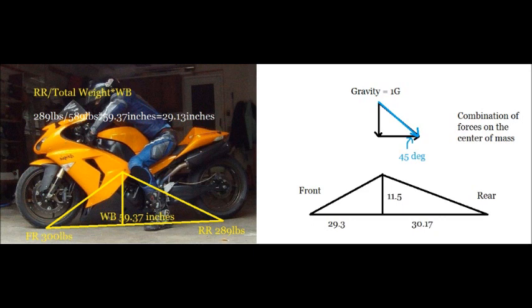So since both forces are the same, we can see on the picture that if we combine them, the combination of forces on the center mass is at a 45-degree angle.